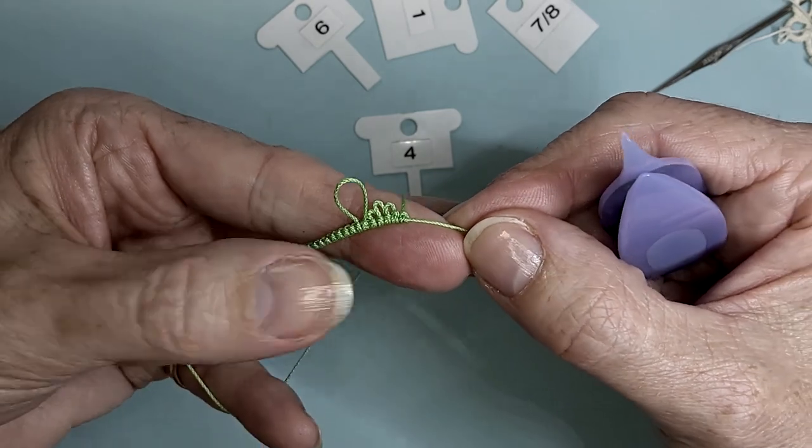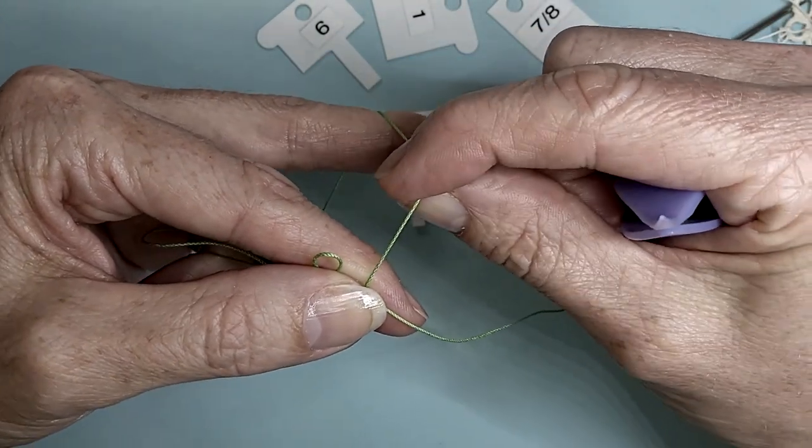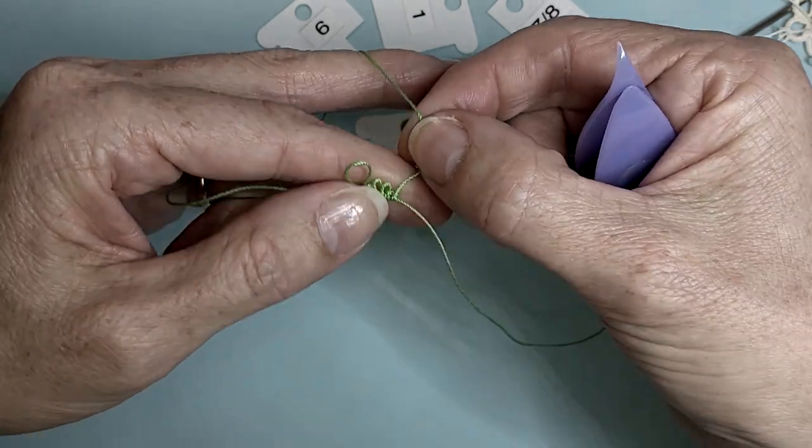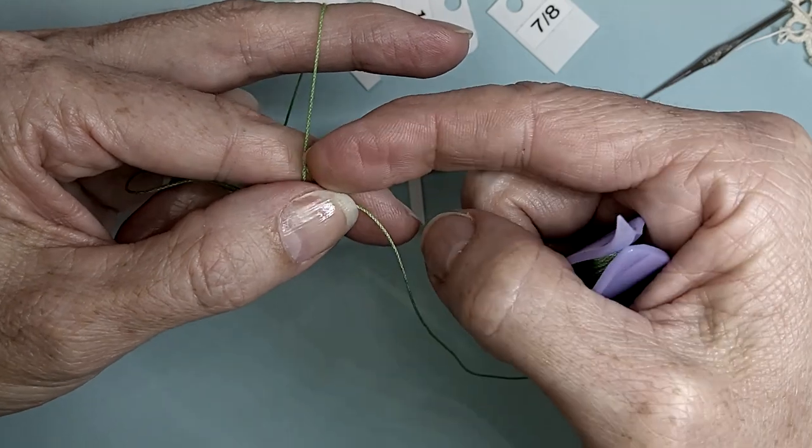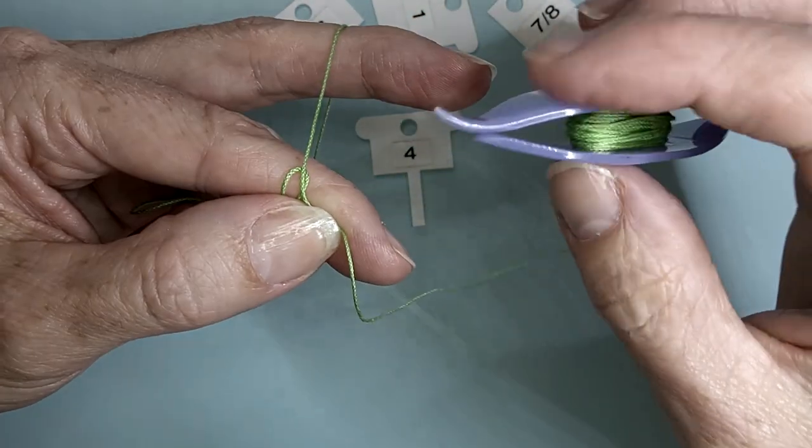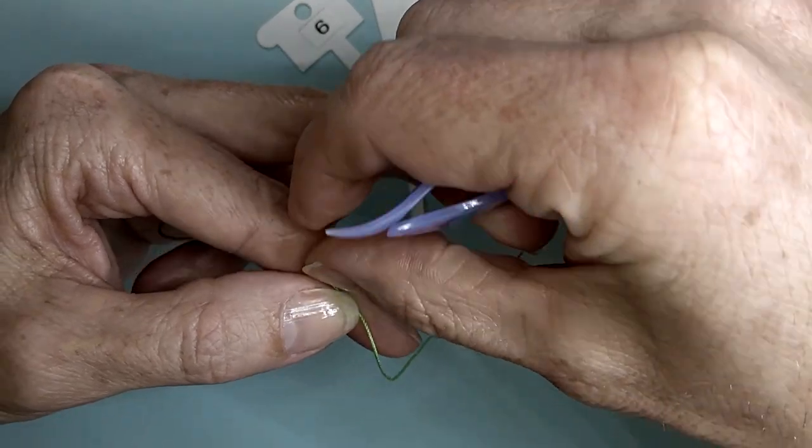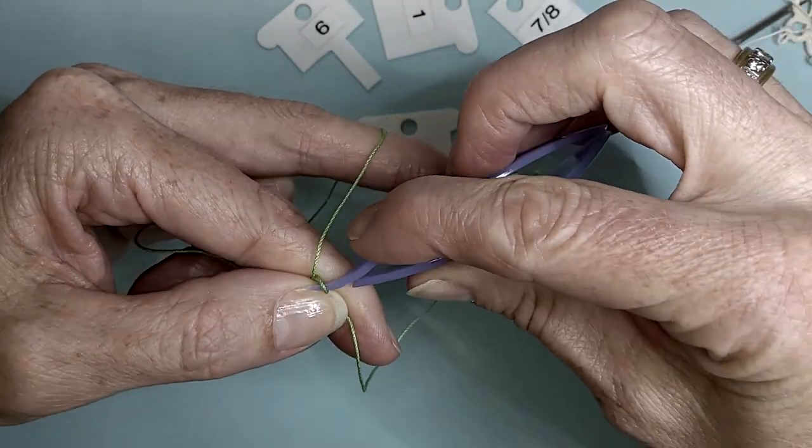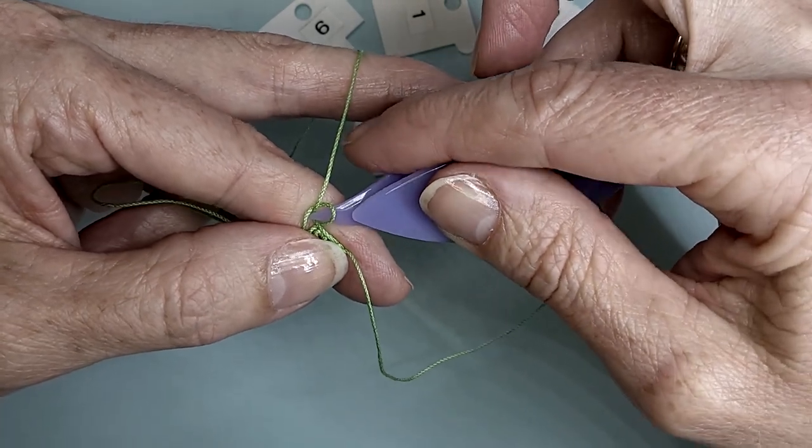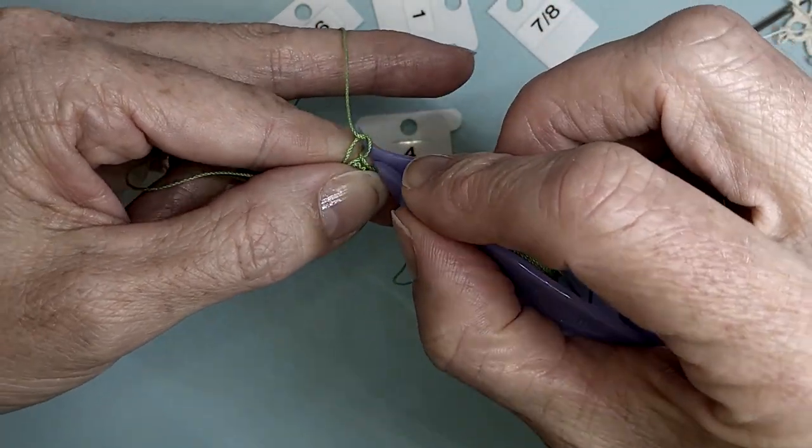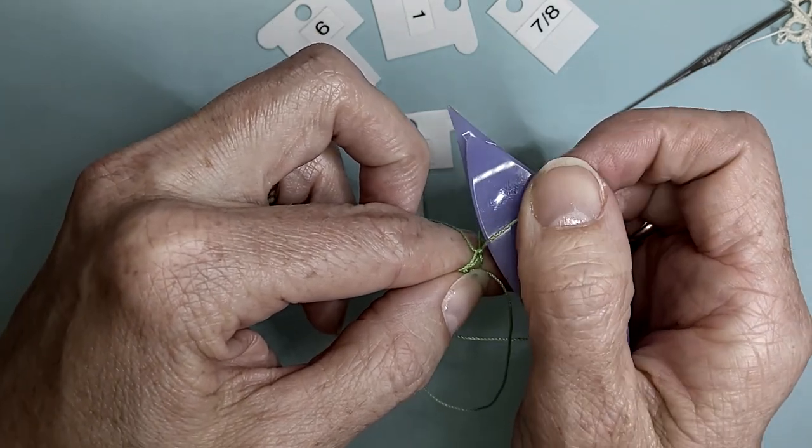To join back to our long picot, take the thread from around your hand and lay it across the top. Coming up from underneath, pull that thread down. Pass your shuttle through the loop.